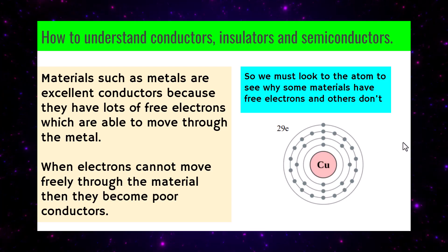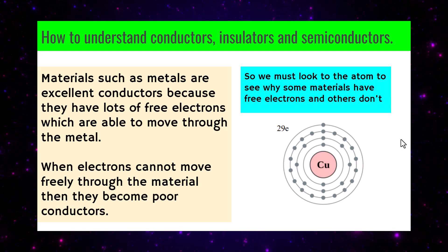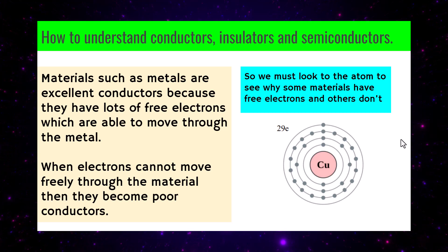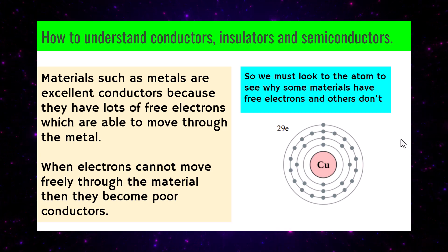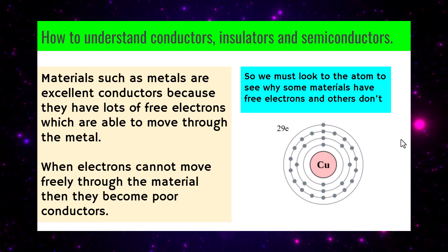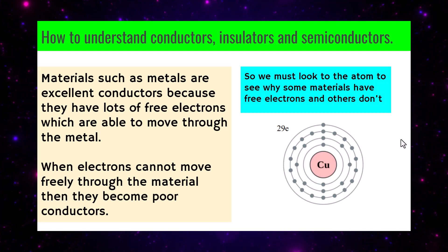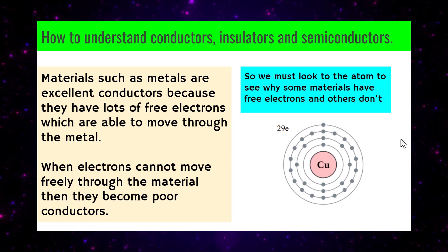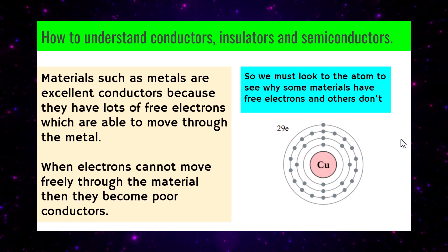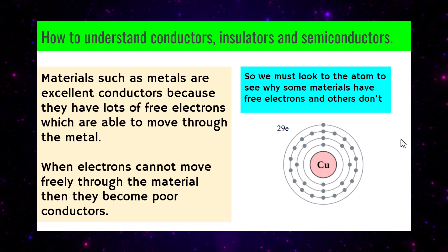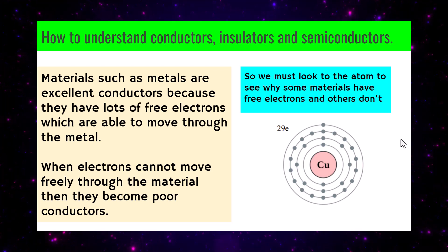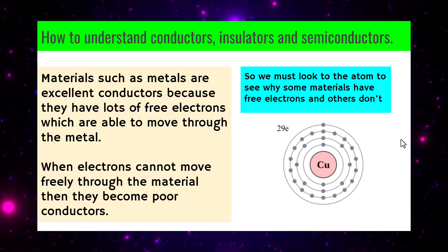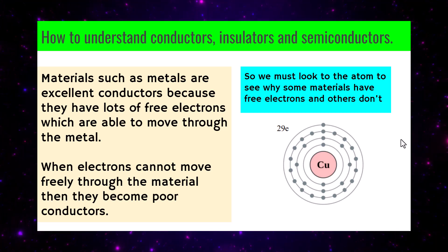Materials such as metals are excellent conductors because they have lots of free electrons which are able to move through the metal. The electrons can move into spaces around what we call shells. When electrons cannot move freely, the material becomes a poor conductor because the electrons cannot move about.